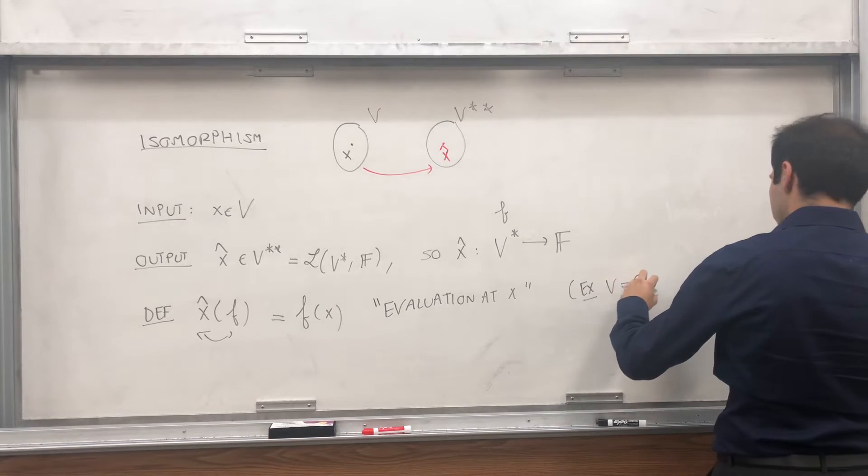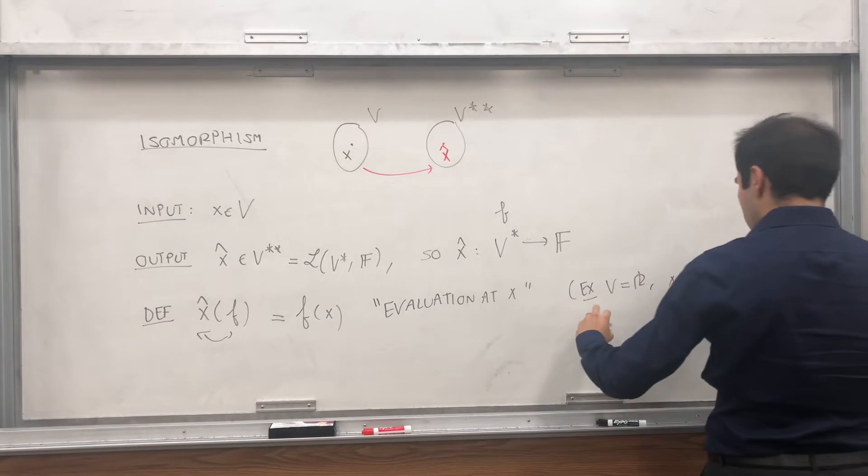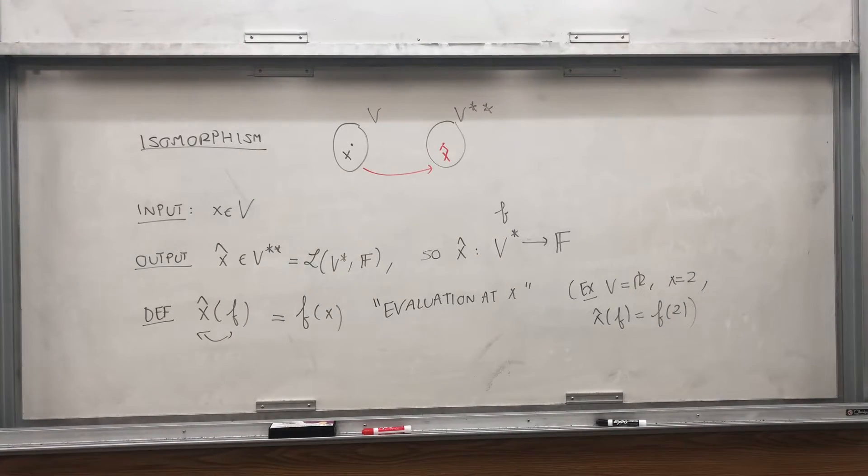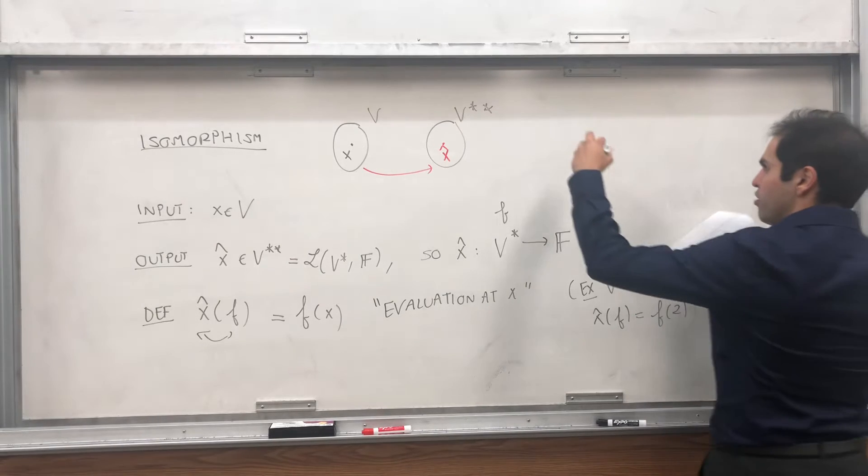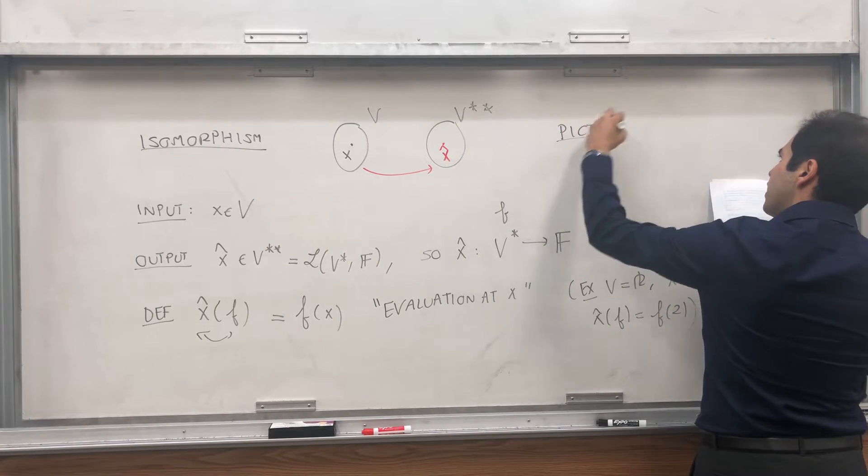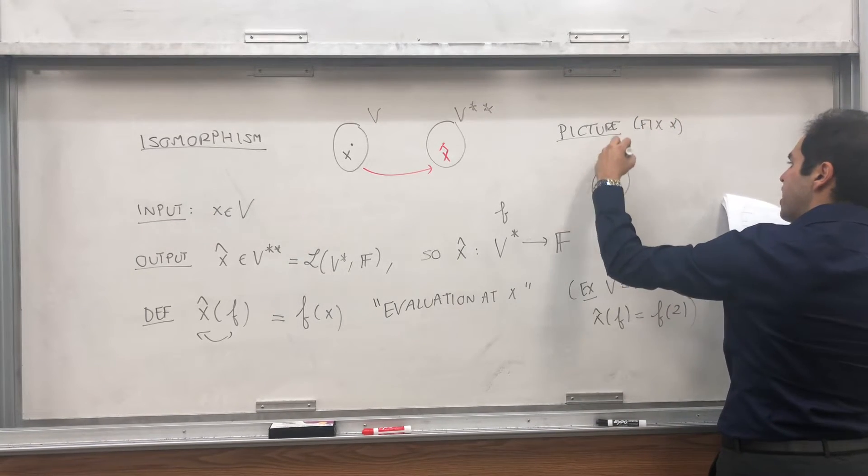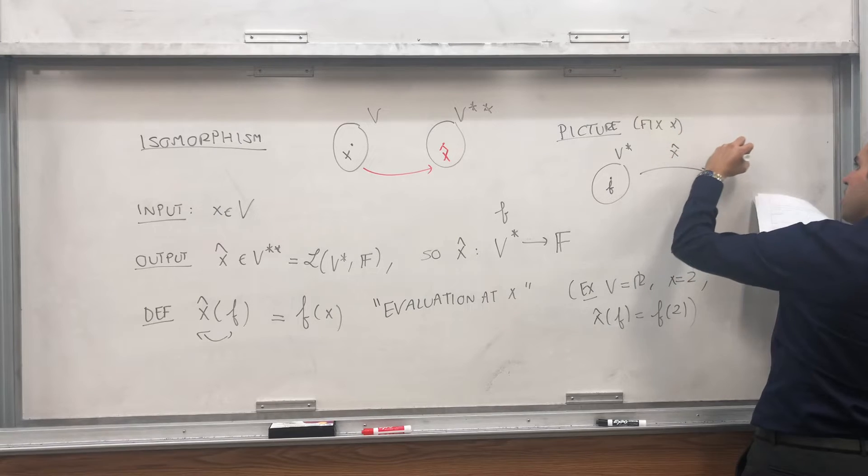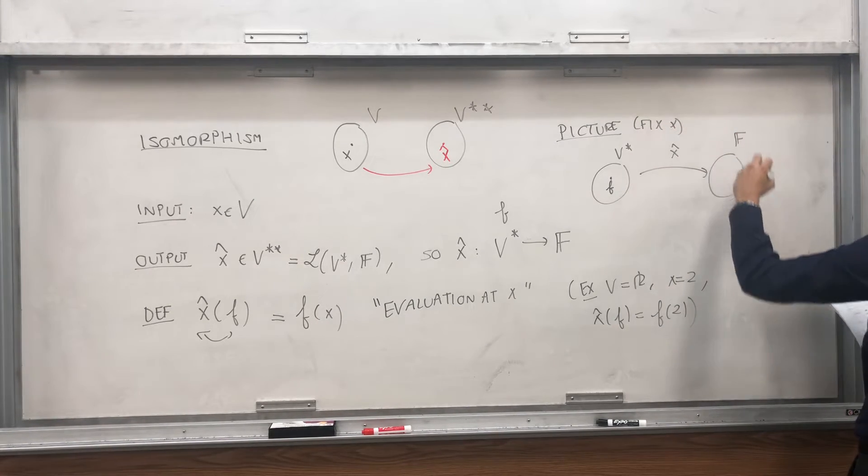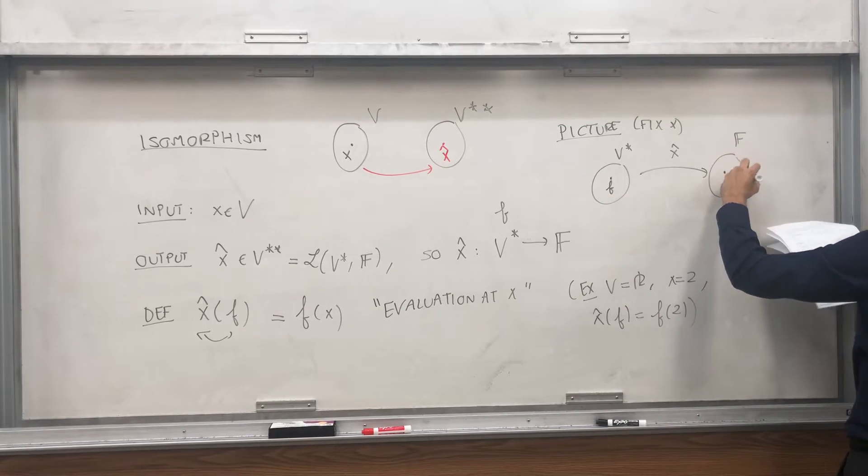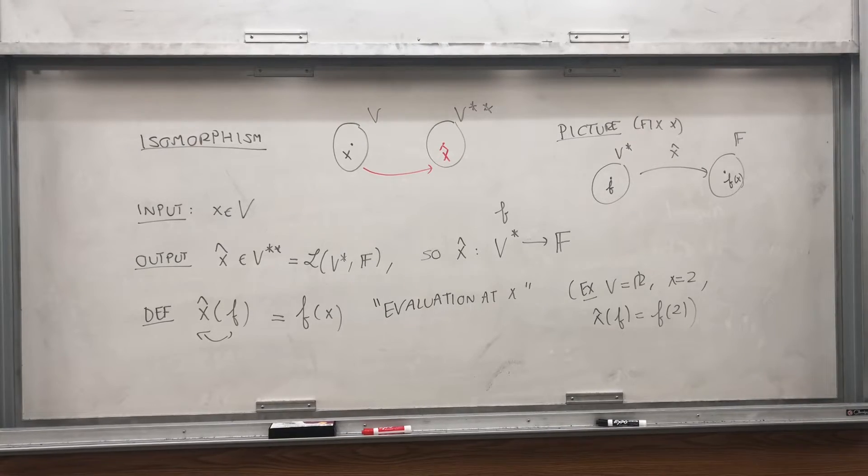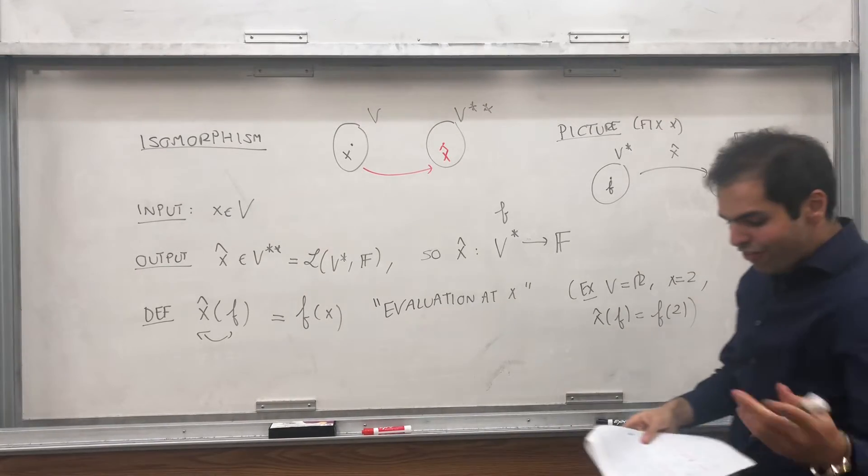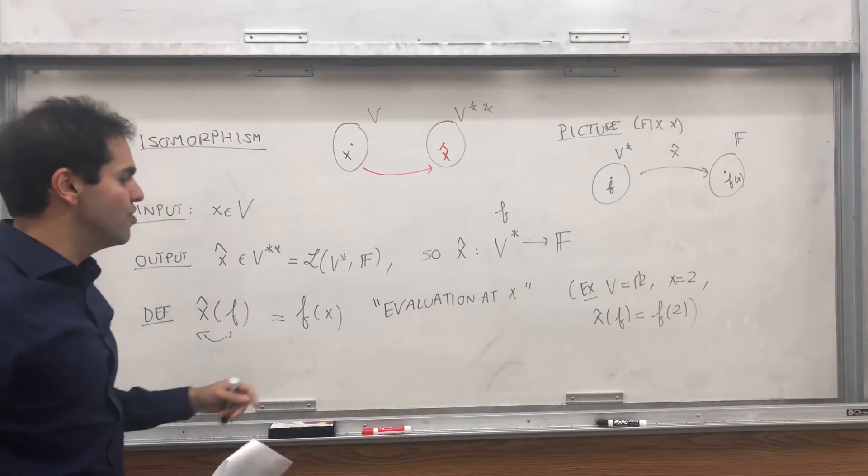For example, think the vector space is just the real numbers. And x equals 2, then x hat of f just evaluates any function at 2. But here, it's in general at x. And if you want to use a little picture, again, if you fix x, then what does x hat do? Well, we have V star here, where we have f, and then we have x hat. It indeed is a linear transformation from V star to f, because it just evaluates f at x. But the point is here, x is fixed, but generally, x is the input of your isomorphism. And in fact, I'm claiming that this is an isomorphism, surprisingly.